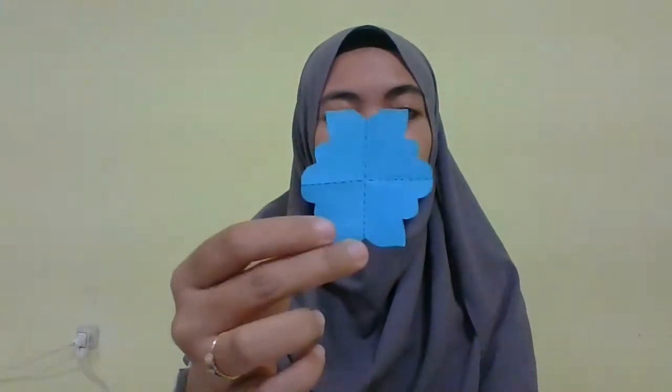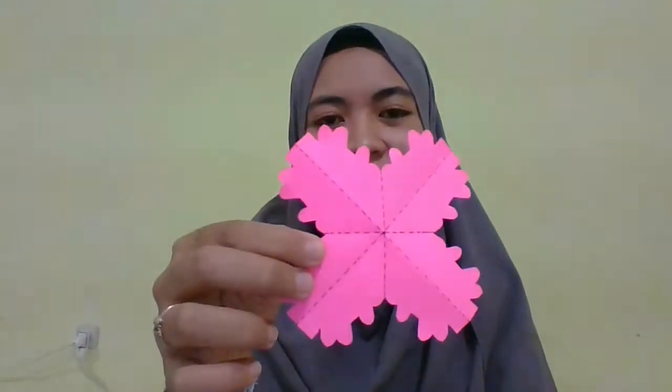So here are examples of shapes: one symmetry line, two symmetry lines, and four symmetry lines. Actually, you can create your own shape. I just show you in this video how to make exactly one, two, and four symmetry lines.